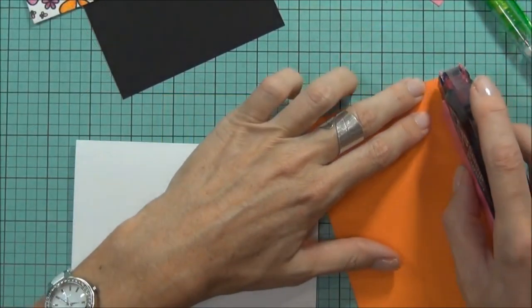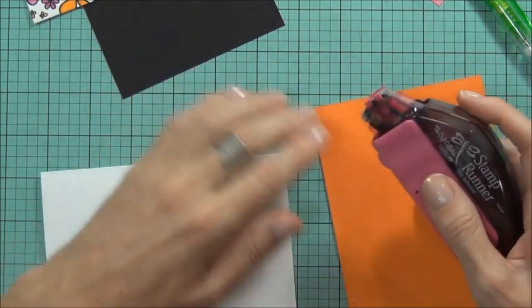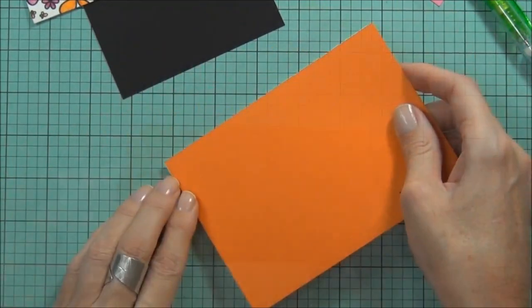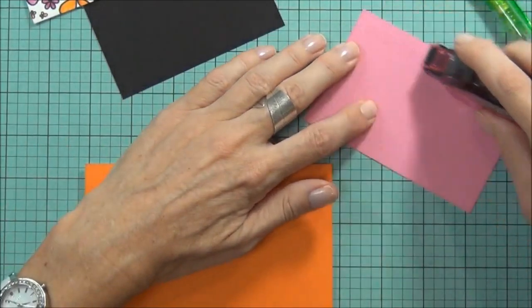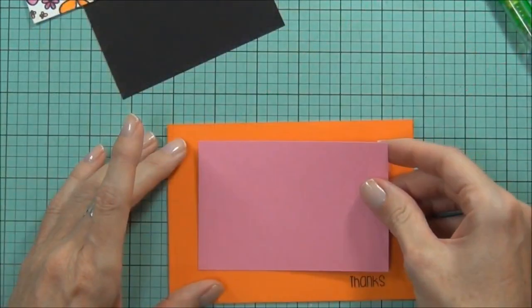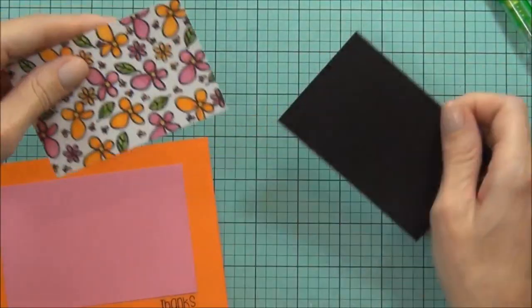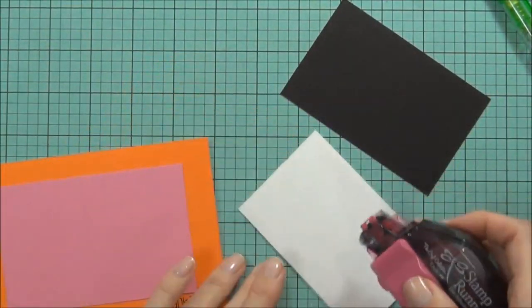My landscape card is 10 1/2 by 15cm and I'll just pop this panel on the front and then the pink cardstock. And now for my watercolor piece.